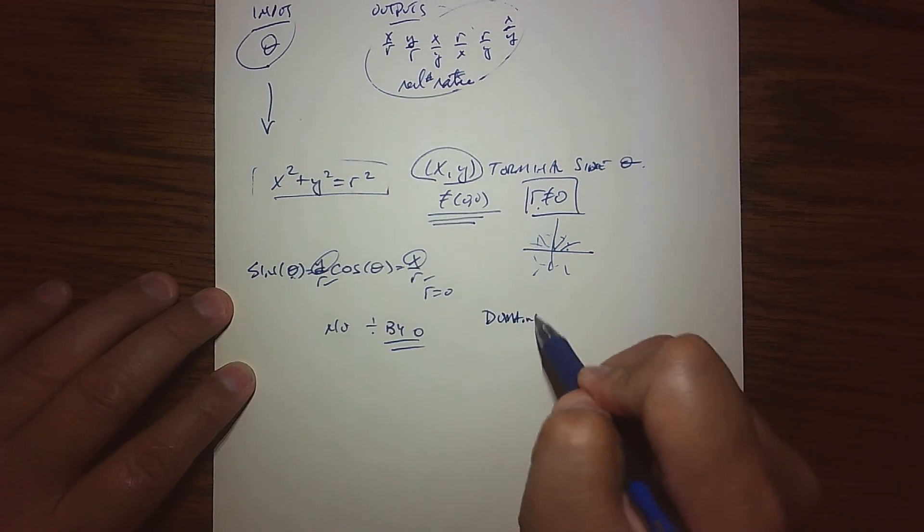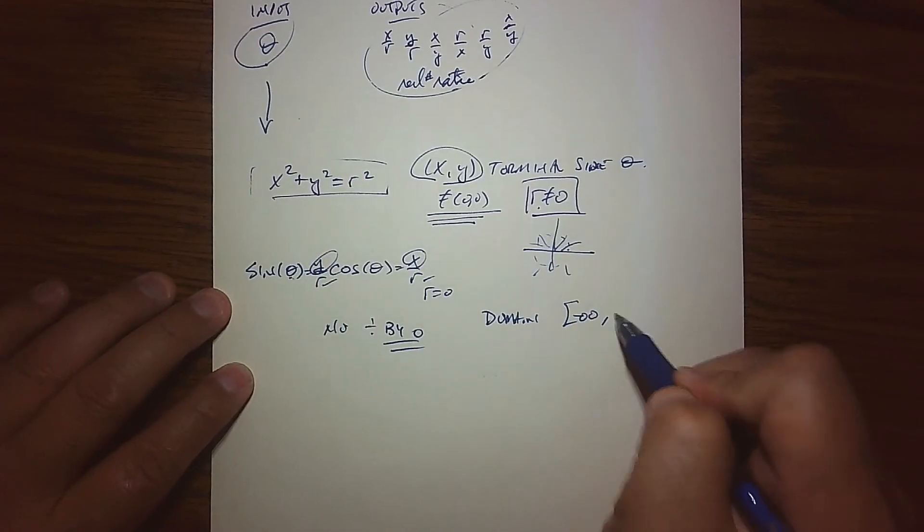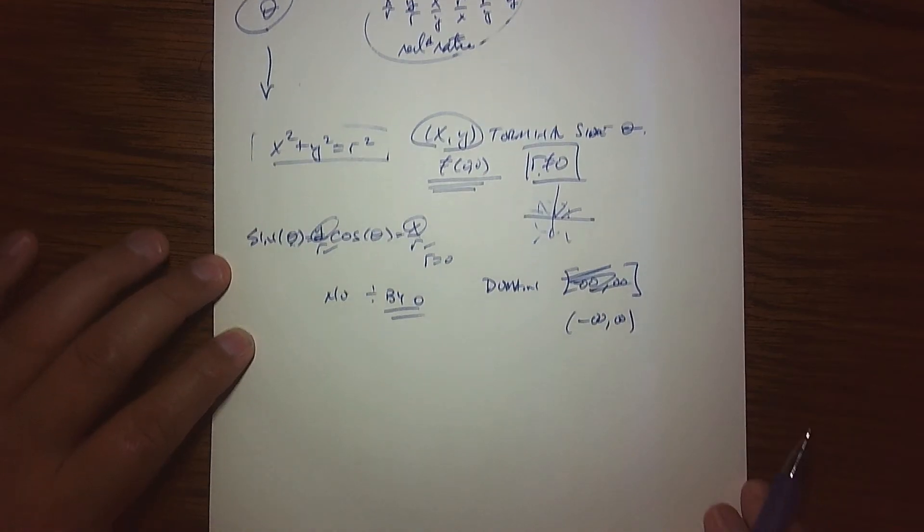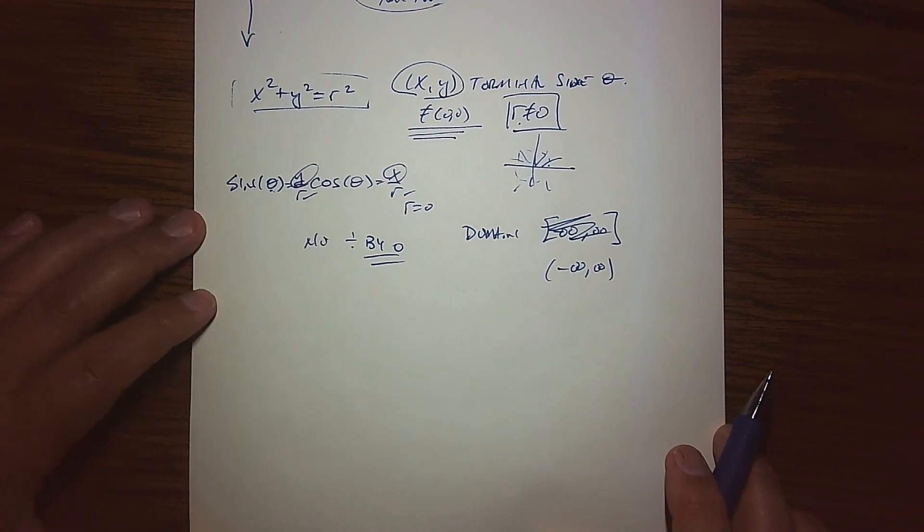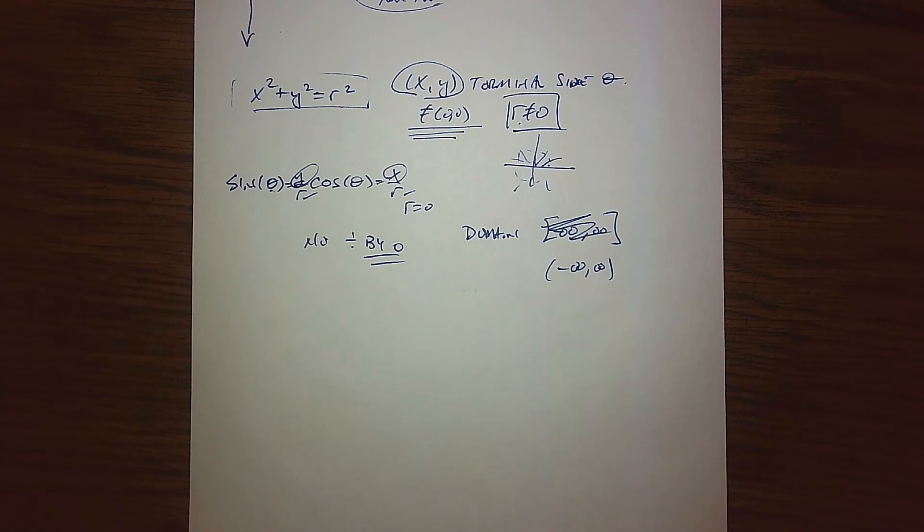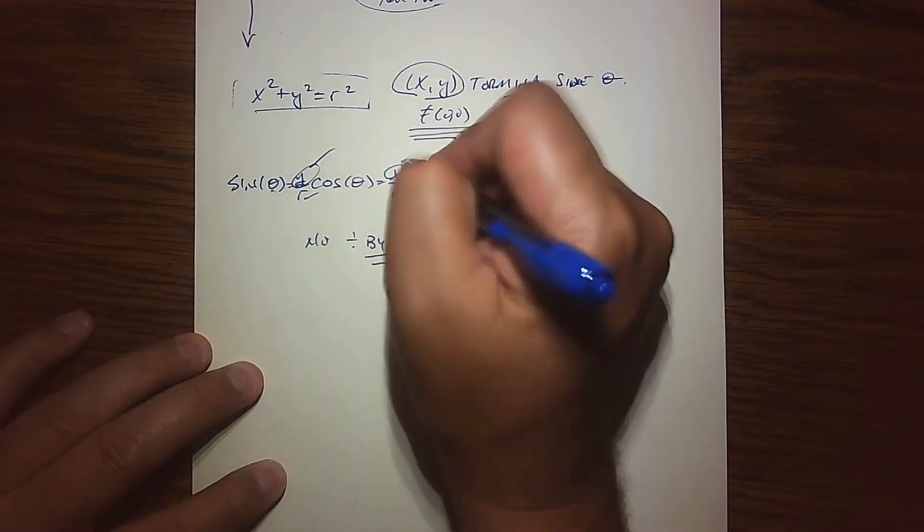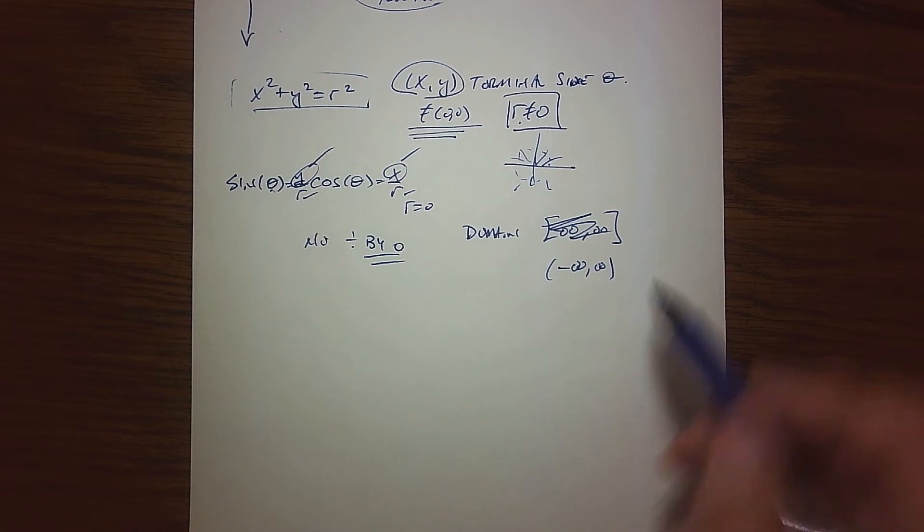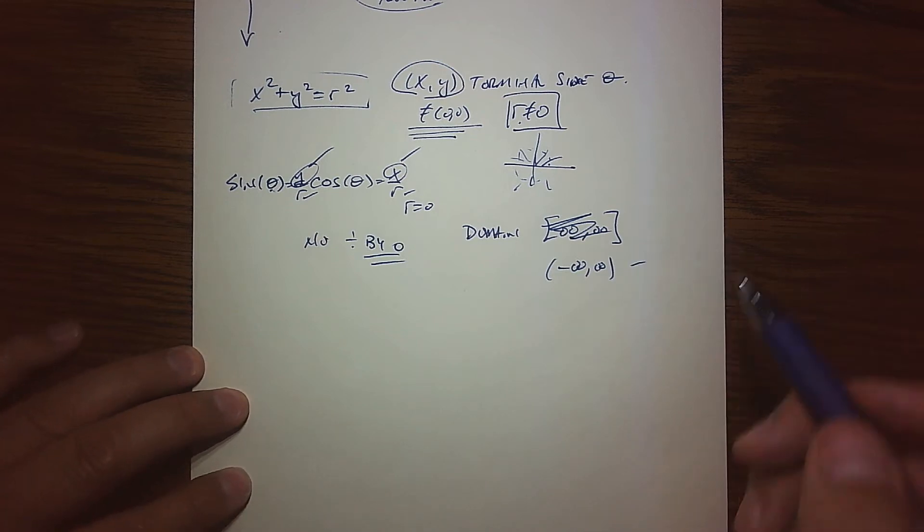There is no division by zero ever. Basically, the domain of these two functions is very strong. We would basically say it's from negative infinity to infinity. We have a very strong function, so sine and cosine are strongest functions. You can put whatever angle you want and you're always going to get some Y over R or X over R coming out of that.